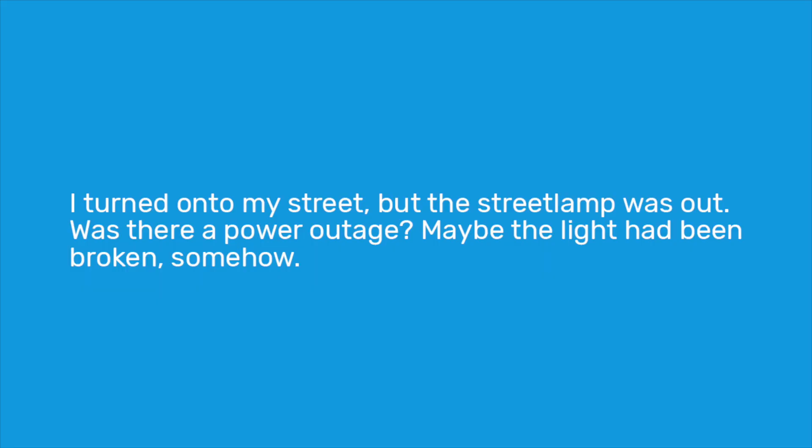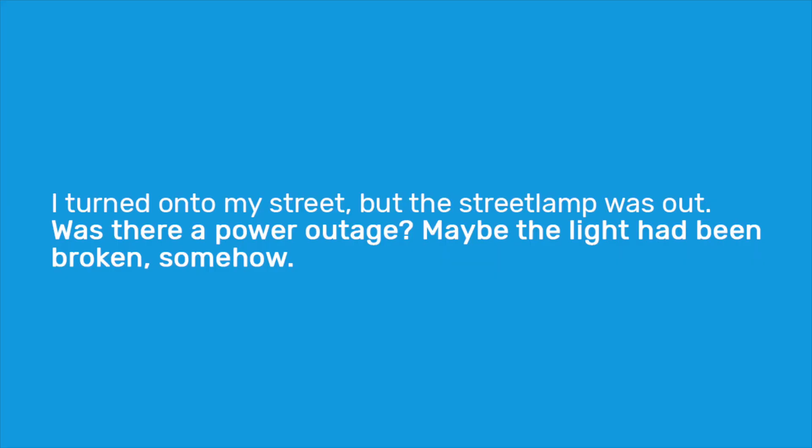The seamless method is when thoughts are integrated directly into the narrative. For a first person example: "I turned onto my street but the street lamp was out. Was there a power outage? Maybe the light had been broken somehow." The character's thoughts — 'was there a power outage' and 'maybe the light had been broken somehow' — are directly integrated into the narrative voice. They aren't differentiated in any way. We're not told 'hey, this is a thought.' But because we're in first person, we don't need to. In first person, everything is a thought.